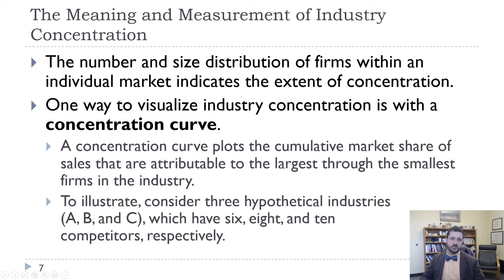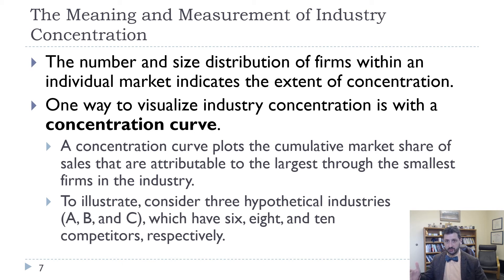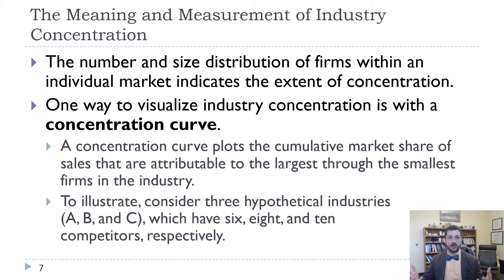One thing we want to do is measure how concentrated an industry is. If we think about monopoly on one end, where one firm controls all of the market, and perfect competition on the other end, where no one firm has any significant market share, there's a big range between those. We're going to look at a few hypothetical industries — A, B, and C — and think about how we might measure the concentration in those industries.